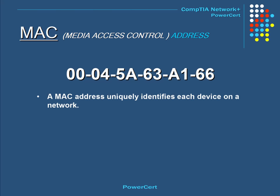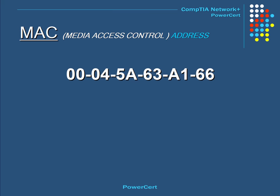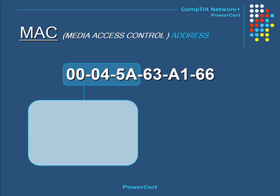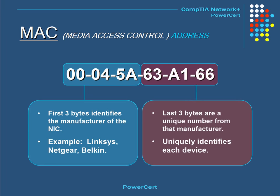The MAC, or Media Access Control, address is an identifier that every network device uses to uniquely identify itself on a network. No two devices anywhere in the world have the same MAC address. It is made up of a 6-byte hexadecimal number burned into every NIC by its manufacturer. The MAC address is broken up into two parts: the first three bytes identify the manufacturer of the NIC, such as Linksys, Netgear, or Belkin, and the last three bytes are a unique number from the manufacturer that identifies each device on a network.